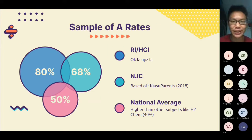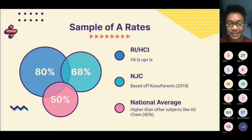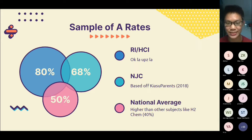The A-rates for H2 Math are actually relatively high compared to other subjects. Compared to Chemistry, which is around 40%, the national average for H2 Math is significantly higher. At some schools it goes higher still — the national figure is around 68%, and at Hwa Chong it was 80%.